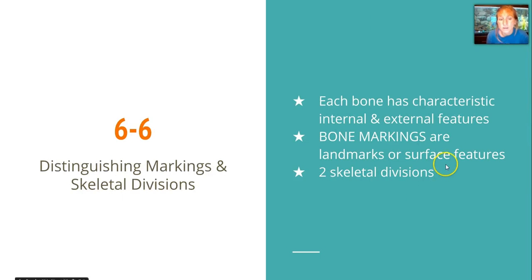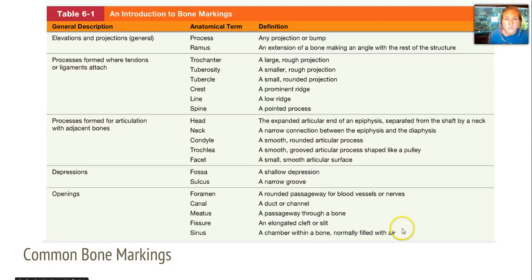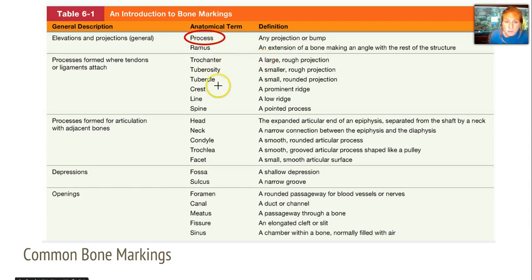Section 6-6 talks about some distinguishing markings in the bones — the anatomical landmarks of the skeletal system — and we're also going to break down the two skeletal divisions. This table is a good one to look at to help you remember all the bones for your bone quiz. A few popular ones to note: a process is a projection or a bump; spines are a pointed process, and there is one in the skull you'll be labeling; a crest is a prominent ridge, like in your pelvic girdle.